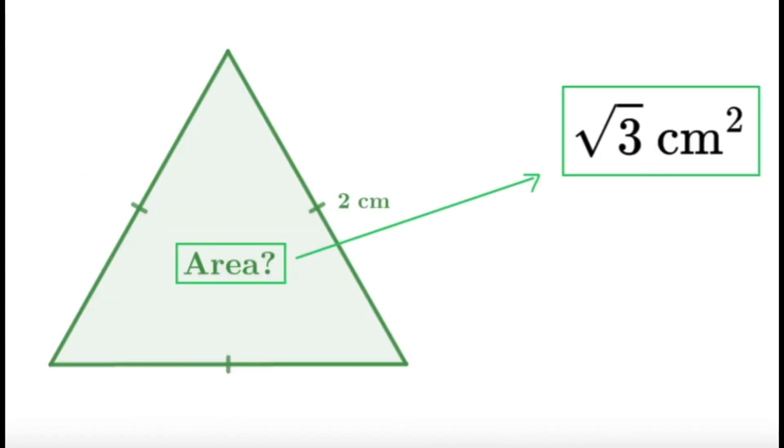So there we have it. Whether you use the first method or the second method, but then again, you can always memorize the formula to speed up your solving process in the future. But nevertheless, the area of the equilateral triangle with a side length of 2 cm is going to be square root of 3 square cm. And this will be our final answer.